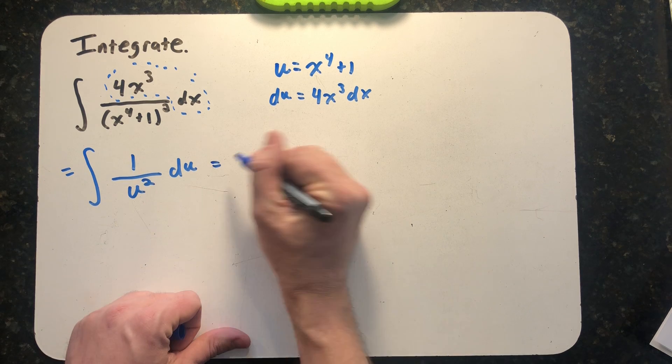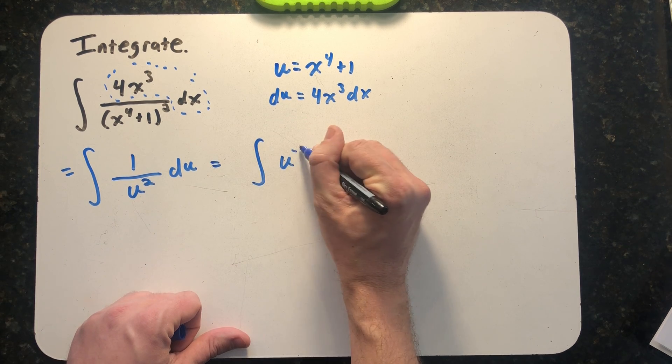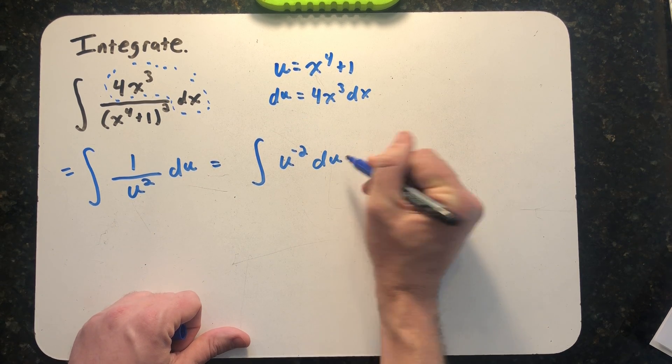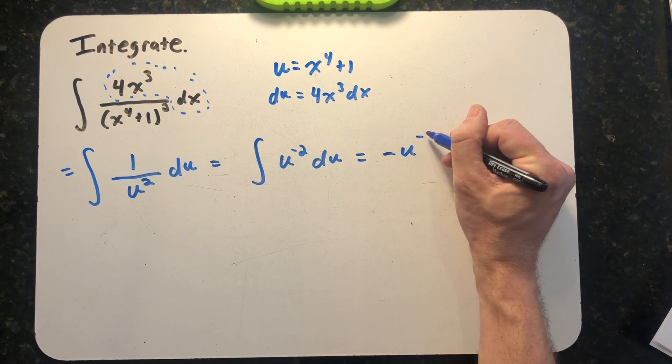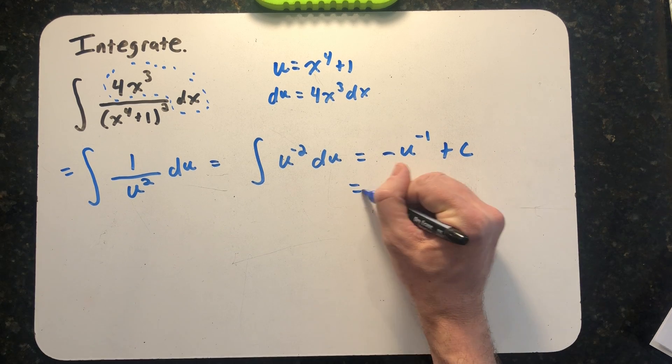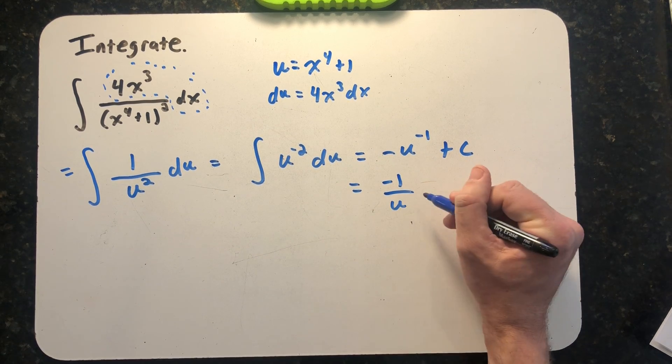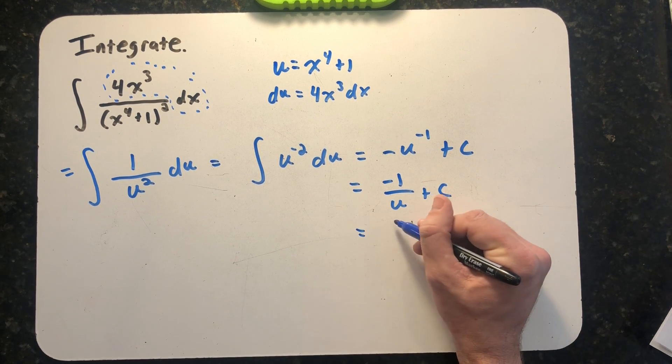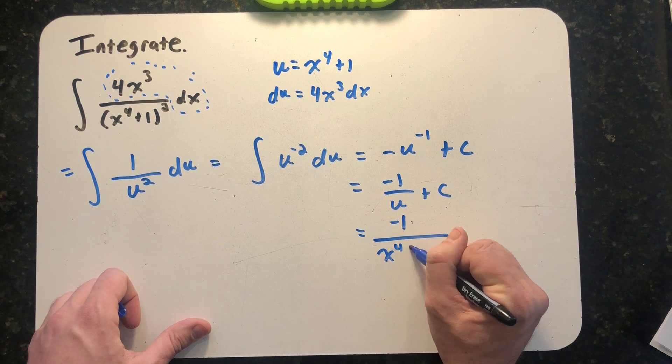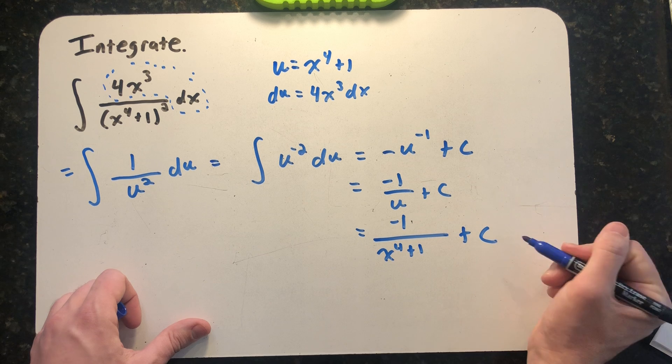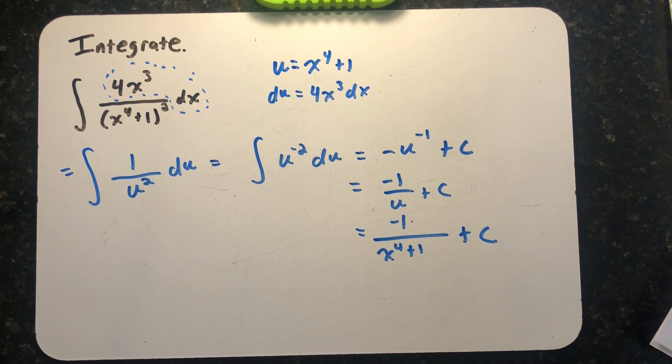I can use the power rule, so I get -u⁻¹ + c, or -1/u + c. Finally, plugging back in, I get -1/(x⁴ + 1) + c, and we successfully integrate our function.